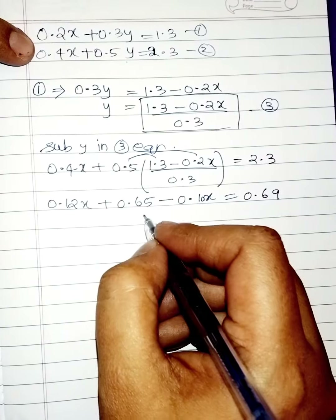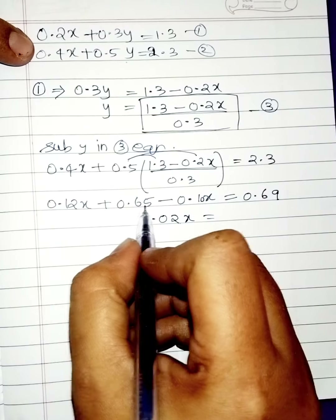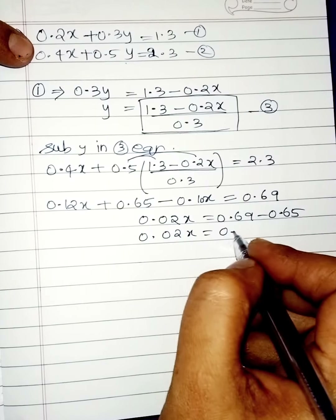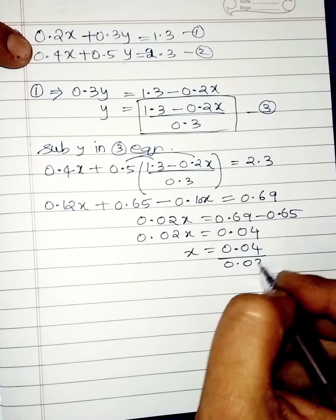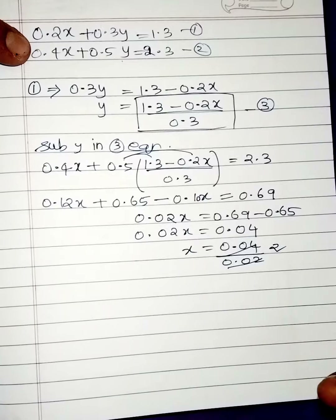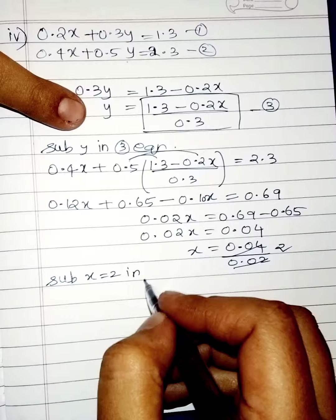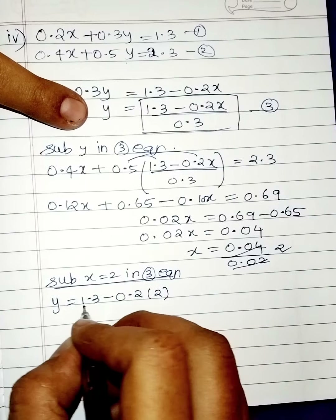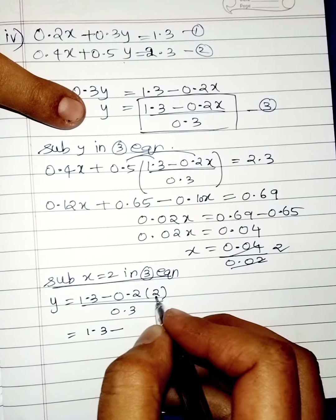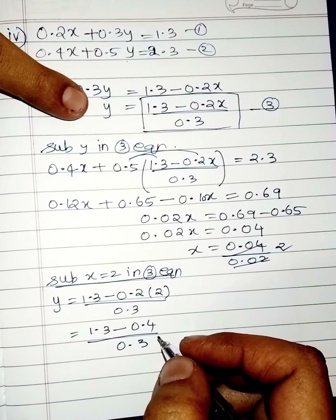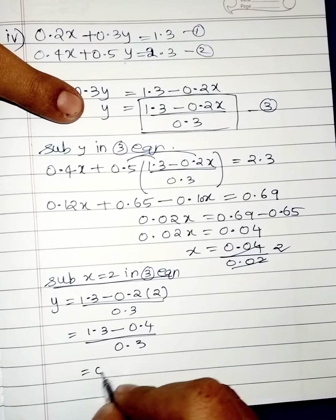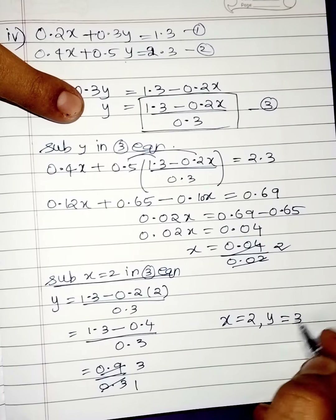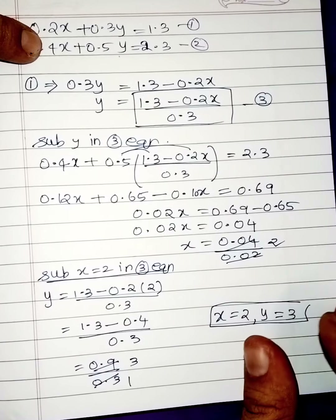Subtracting 0.1x from 0.12x gives 0.02x. Taking 0.65 to the other side: 0.02x equals 0.69 minus 0.65 equals 0.04. So x equals 0.04 divided by 0.02 equals 2. Substituting x equals 2 into the third equation: y equals (1.3 minus 0.2 times 2) divided by 0.3 equals (1.3 minus 0.4) divided by 0.3 equals 0.9 divided by 0.3 equals 3. Therefore x equals 2, y equals 3.